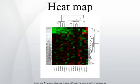A heat map is a graphical representation of data where the individual values contained in a matrix are represented as colors.